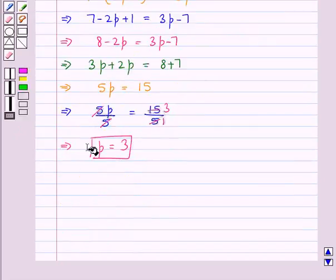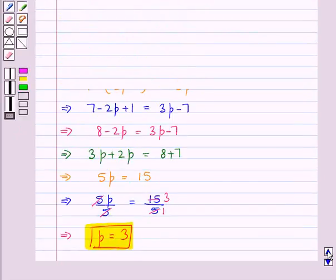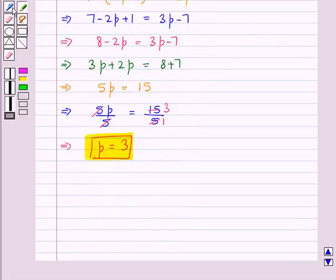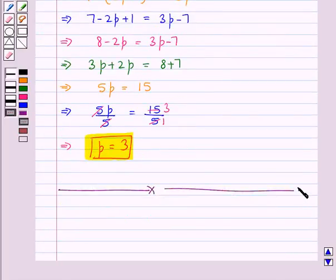So, we get the value for P as 3, for which the given three terms are in AP. So, this is our final answer. This completes the session. Hope you have understood the solution of this question.